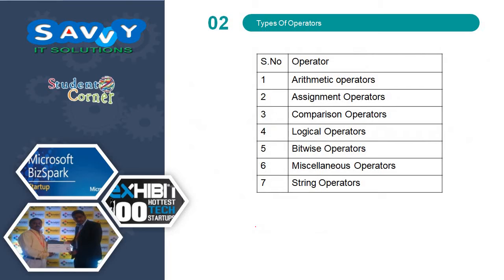In JavaScript we have seven categories of Operators: Arithmetic Operators, Assignment Operators, Comparison Operators, Logical Operators, Bitwise Operators, Miscellaneous Operators, and String Operators.